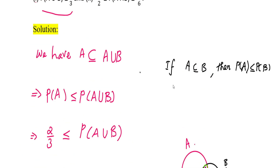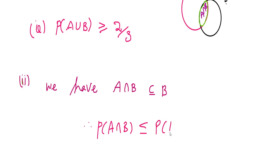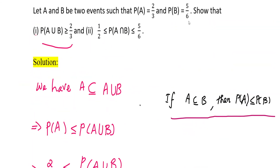We already have the theorem: if A is contained in B, then P(A) ≤ P(B). Here, A∩B is contained in B, so P of the left side is less than or equal to P of the right side. Therefore, P(A∩B) ≤ P(B) = 5/6. Call this equation number 1.